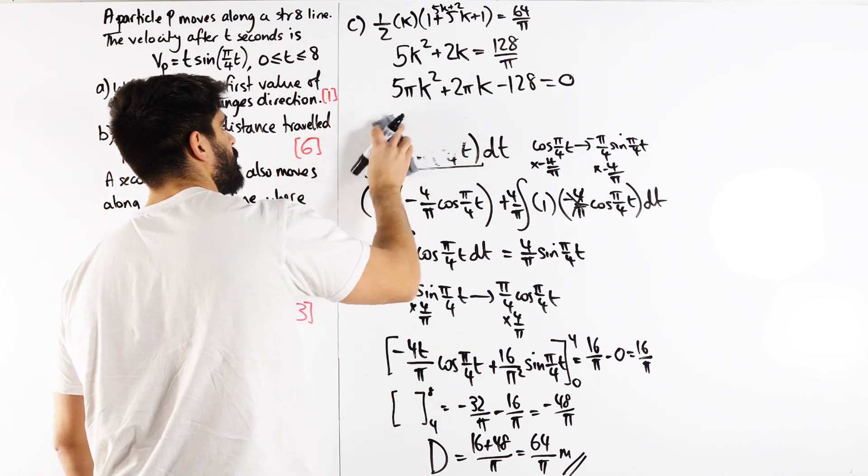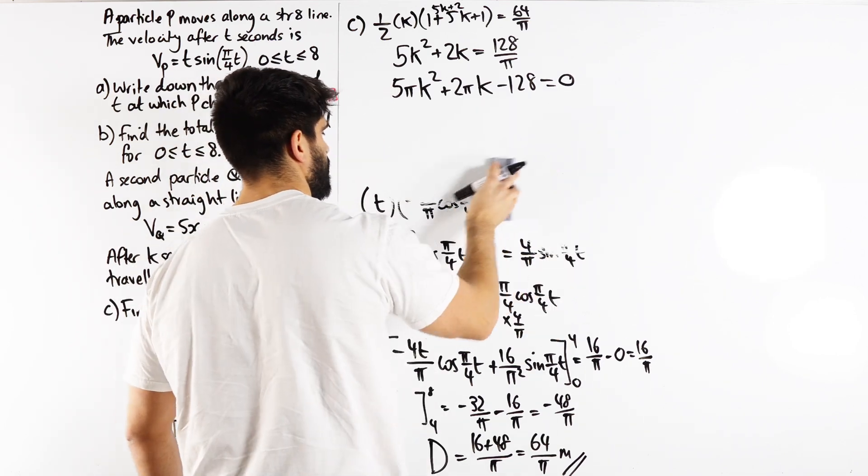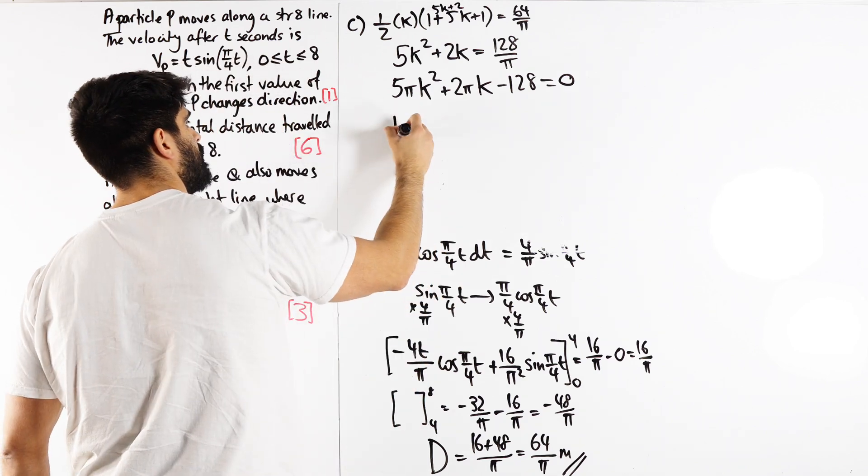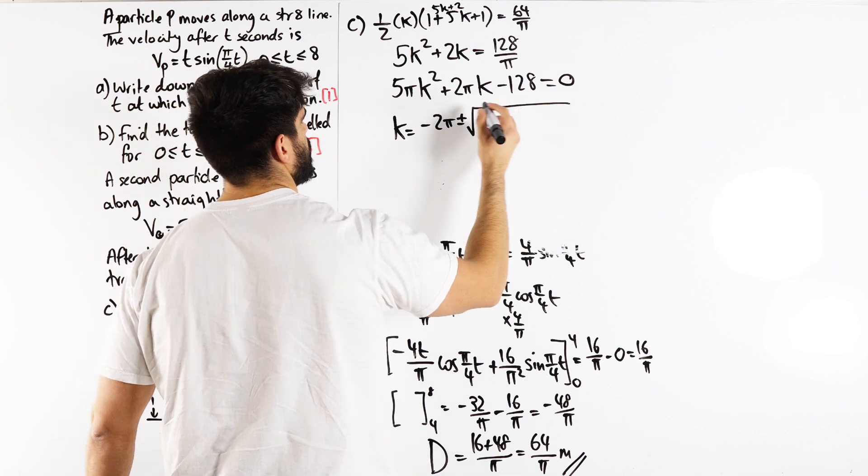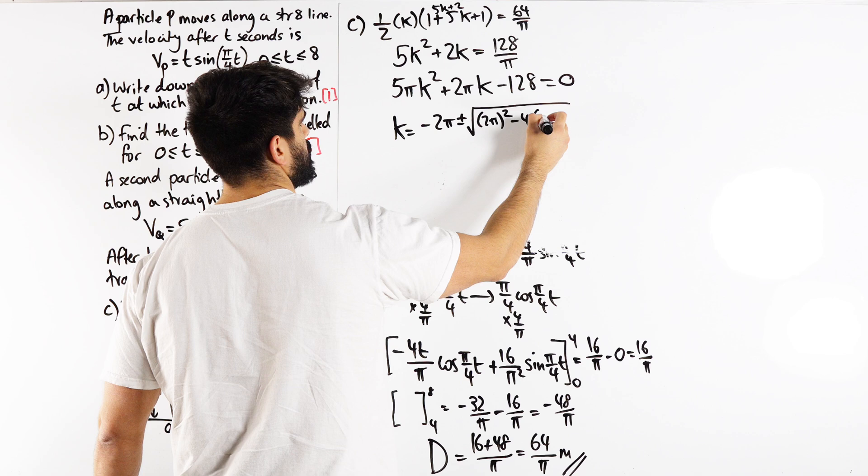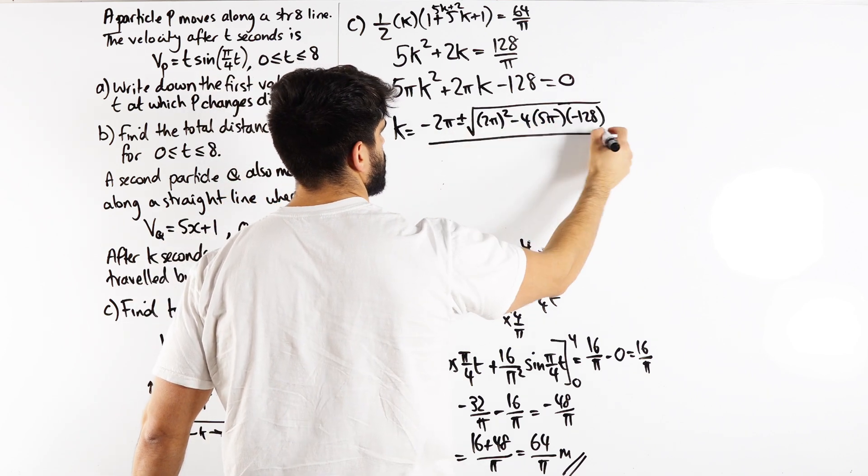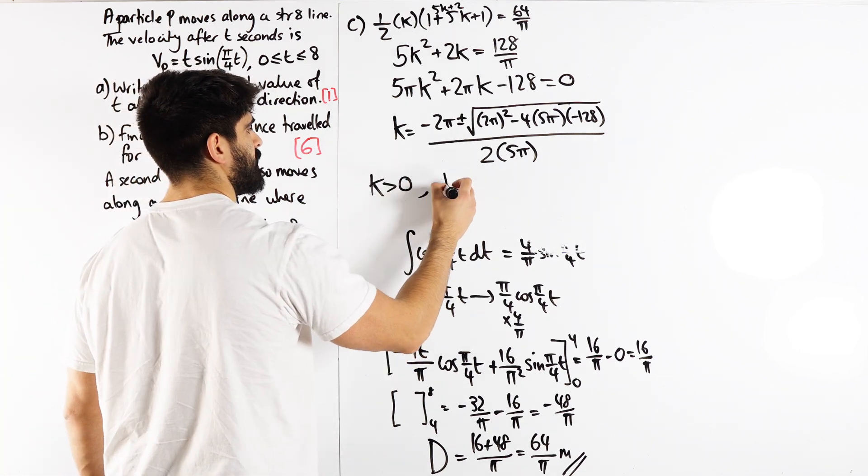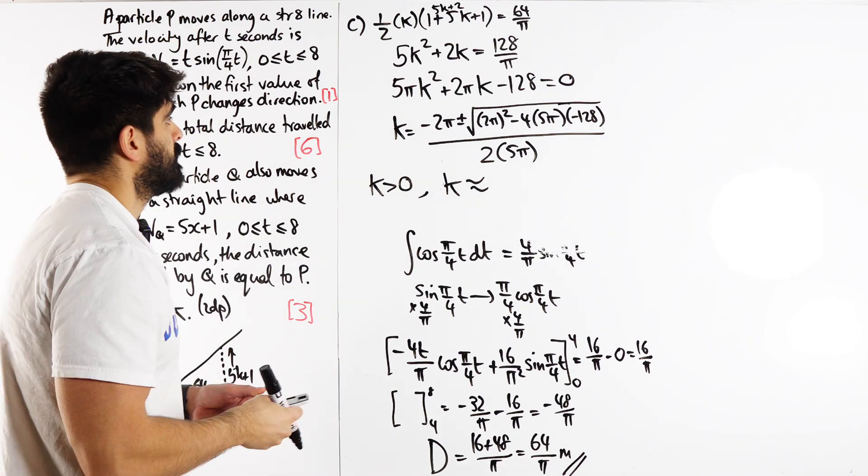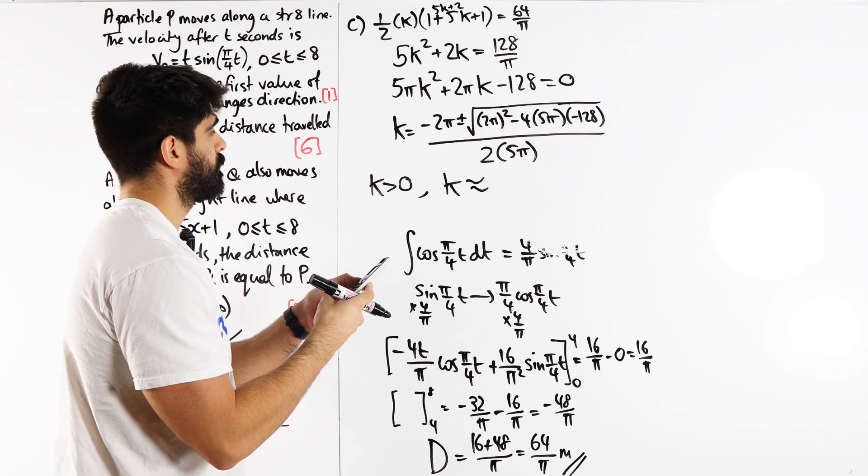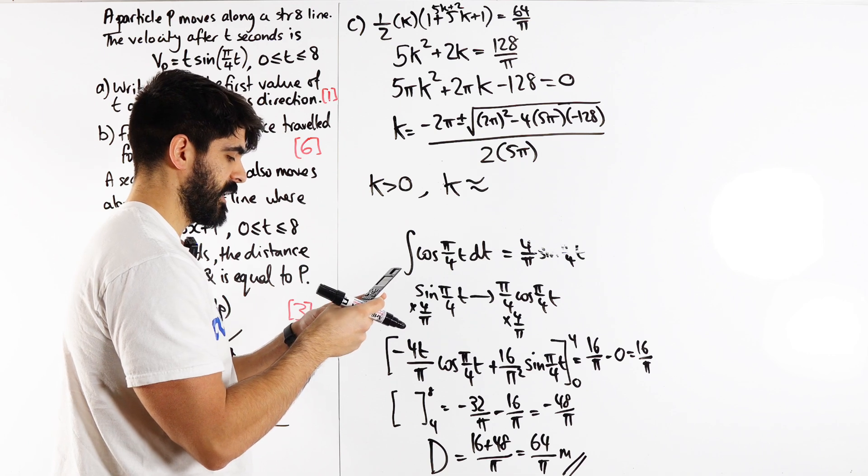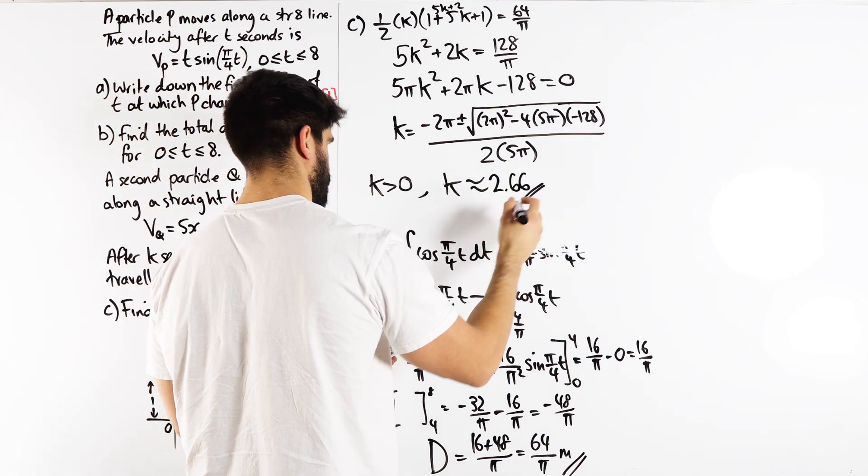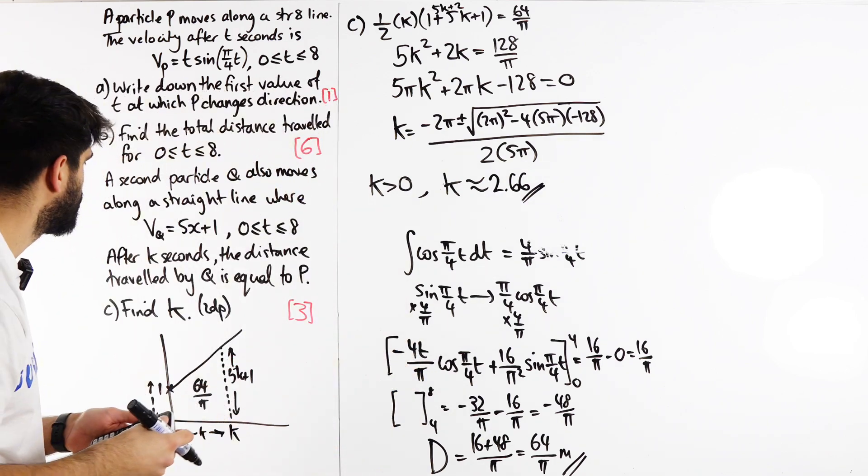In the exam you need to show the quadratic formula. But in your calculator, you type it in as polynomial solver. k is going to be negative b plus or minus root(b² minus 4ac) all over 2a. k obviously has to be positive based on the question, between 0 and 8. So k is approximately, we have 5π, 2π, minus 128. We get 2.66, because the other value is negative 3.06, which is obviously not a value for us. And that's it.